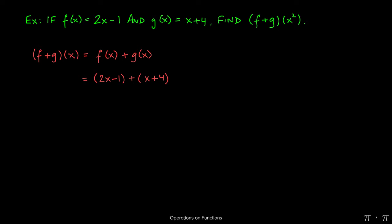the polynomials as we've done before. 2x plus x will give us 3x, negative 1 plus 4 will yield positive 3. So this is essentially the function we're looking for: f plus g of x is 3x plus 3. Now